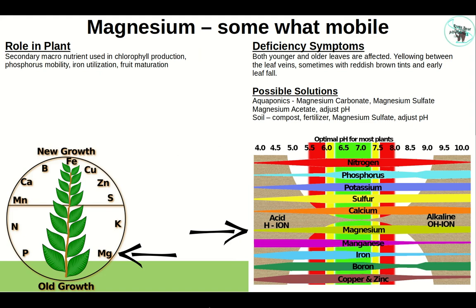Magnesium is somewhat mobile — a secondary macronutrient used in chlorophyll production, phosphorus mobility, iron utilization, and fruit development. Both younger and older leaves are affected, but you'll see it in younger leaves first. Symptoms include yellowing between the leaf veins, a somewhat reddish-brown tint, and early leaf fall. In aquaponics: magnesium carbonate, magnesium sulfate, Epsom salt, magnesium acetate, and adjust pH. In soil: compost, fertilizer, magnesium sulfate, magnesium carbonate, and adjust pH. Anything below pH 6.4–6.5 reduces magnesium availability.